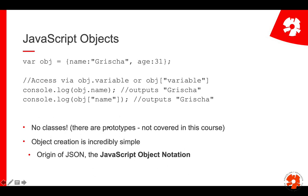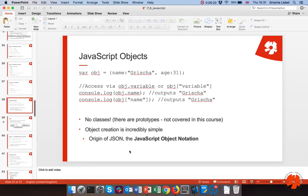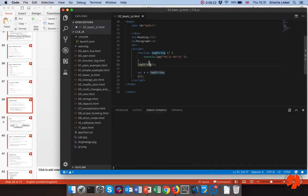In ES5 and lower there are no classes, but there's a prototype system. In newer versions from ES6, they introduced classes as an abstraction on top of the prototype system, but we won't cover that in this course — it will be covered in the second web course. Object creation in JavaScript is really simple, and this is where JSON — JavaScript Object Notation — comes from.